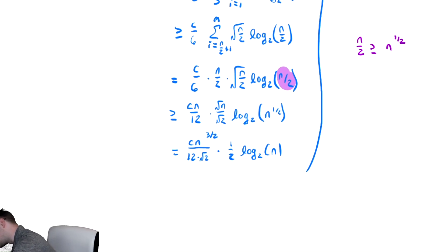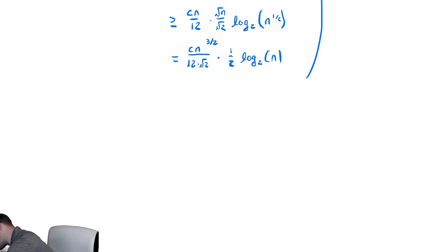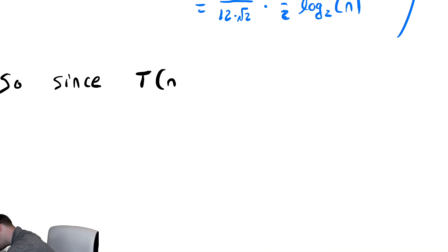Therefore, I can need to draw my final conclusion, which is that we are in theta of that same thing. So since t of n is in big O of n to the three halves log n intersect omega n to the three halves log n,